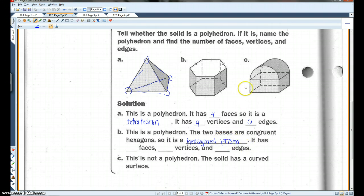It has one, two, three, four, five, six, seven, eight faces. It has one, two, three, four, five, six, seven, eight, nine, ten, eleven, twelve vertices.